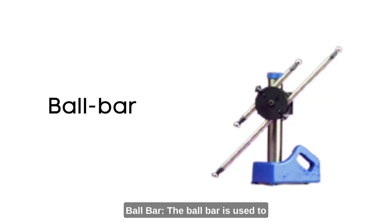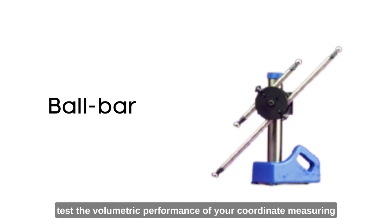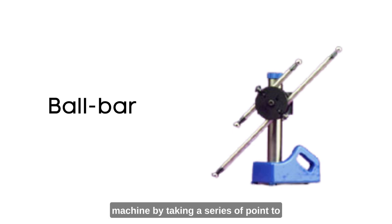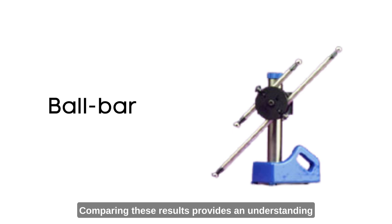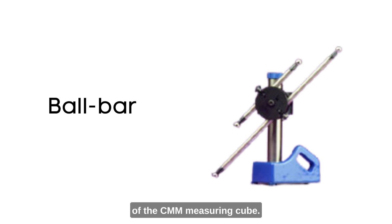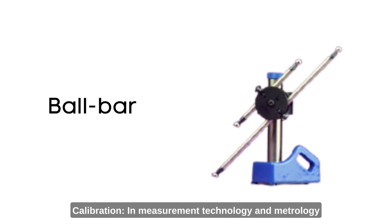Ball Bar: The ball bar is used to test the volumetric performance of your coordinate measuring machine by taking a series of point-to-point distances in reference locations. Comparing these results provides an understanding of the CMM measuring capability.